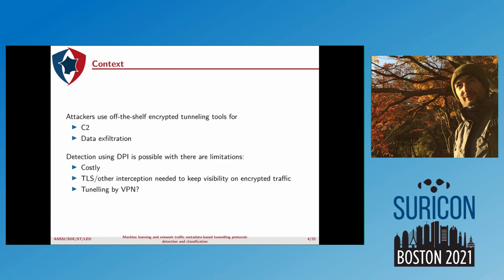In this context, attackers use off-the-shelf encrypting tunnels for two main applications: first, C2 — command and control — and then data exfiltration. If you want to detect this kind of behavior, you can use DPI, but there are some limitations.